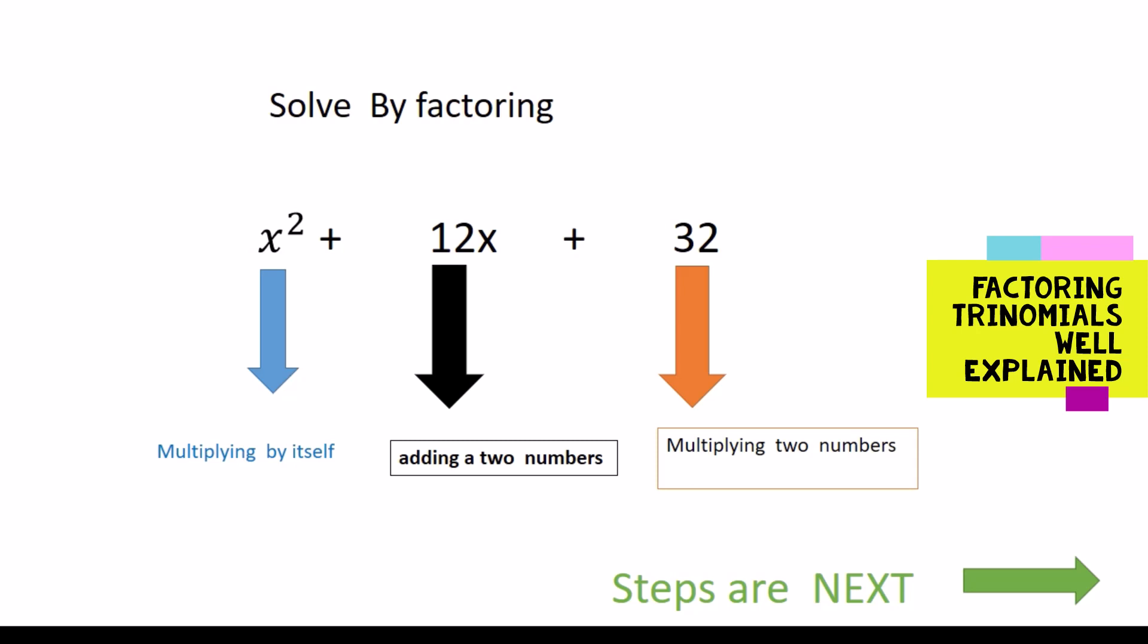To solve this or to factor this correctly is to see the last number which is 32. The question you ask yourself is what are two numbers that multiply to give you 32 but when you combine them gives you the middle term. It gives you the 12x and that's what we're going to see here today. What are those two numbers that when you combine them gives you the middle one which is 12x.